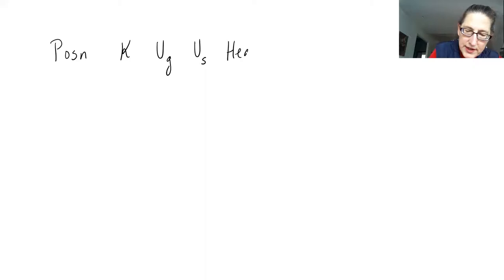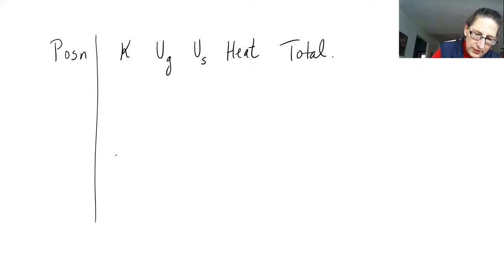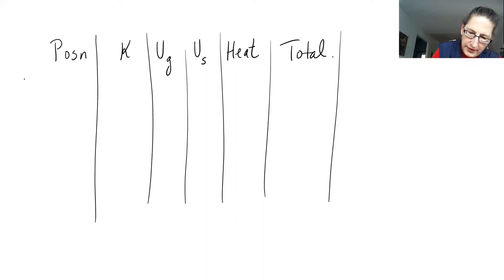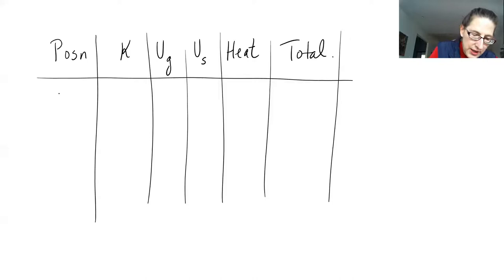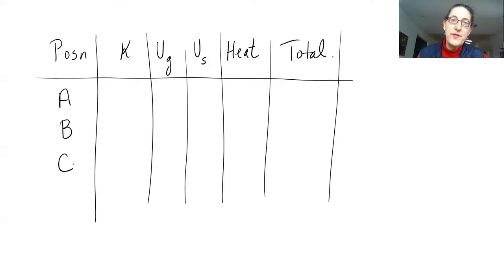Here's how I like to do these problems: make a table. The columns are position, kinetic energy, gravitational potential energy, elastic spring energy, heat, and total. These are the columns you start every single problem with. Then you identify the particular positions of interest for the object — top of the cliff, bottom of the cliff, spring before and after stretching, the ball halfway up — and label them A, B, C.